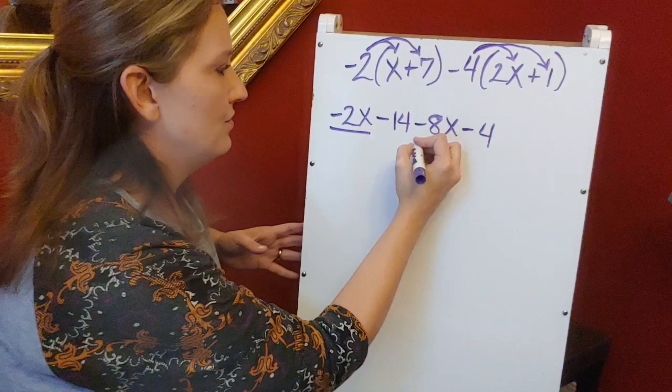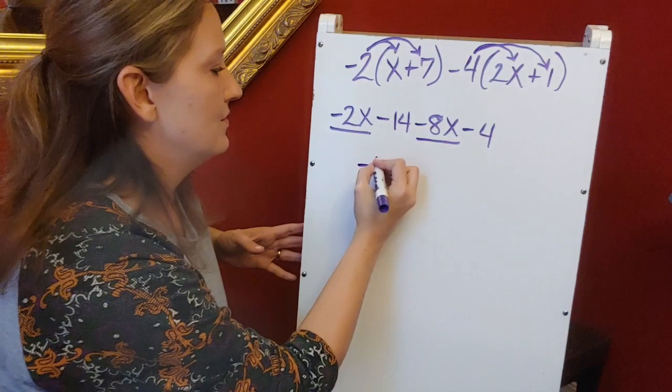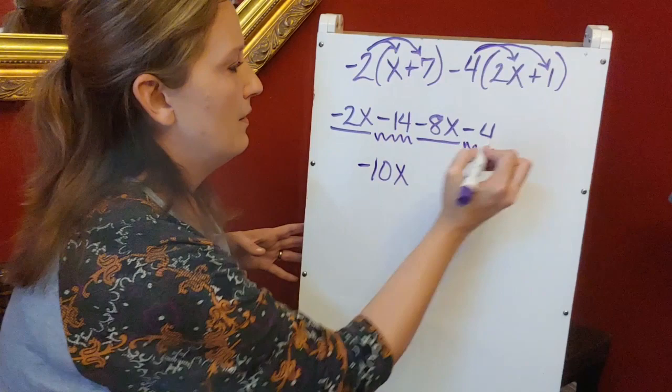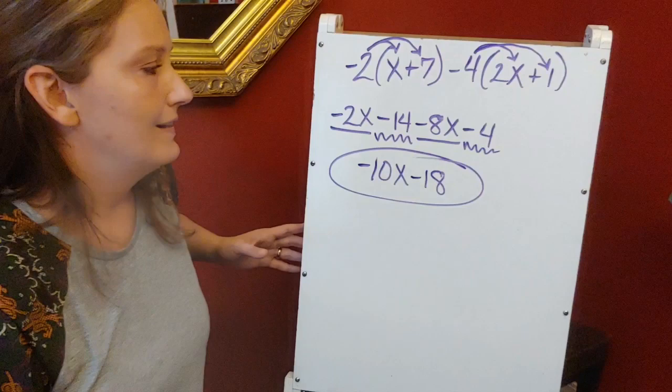Negative 2x and a minus 8x. So negative 2x minus 8x gives me a negative 10x. Negative 14 minus 4 is minus 18.